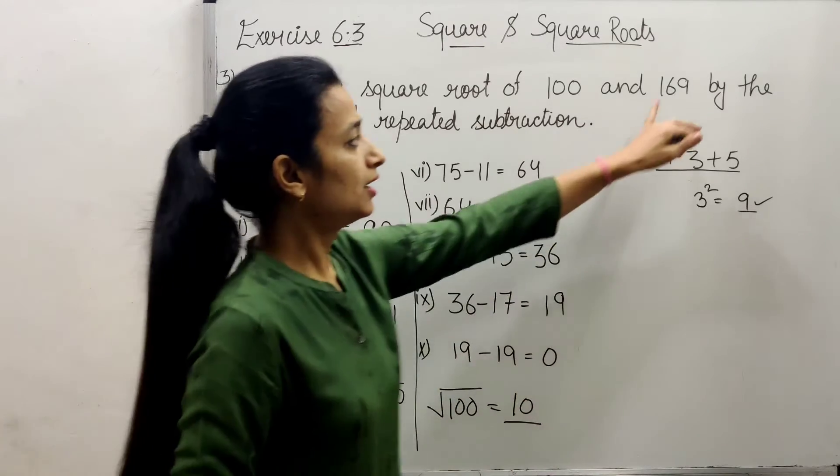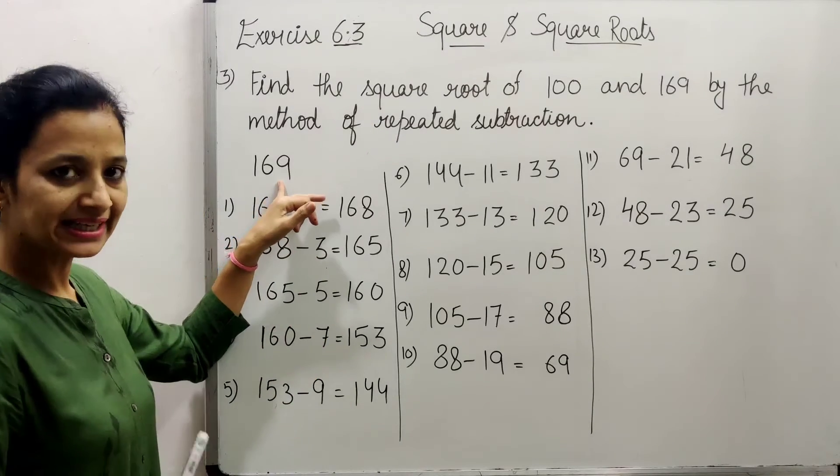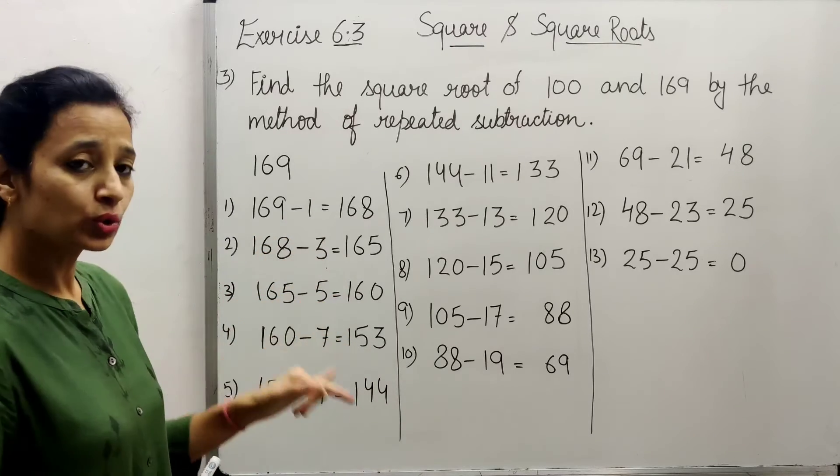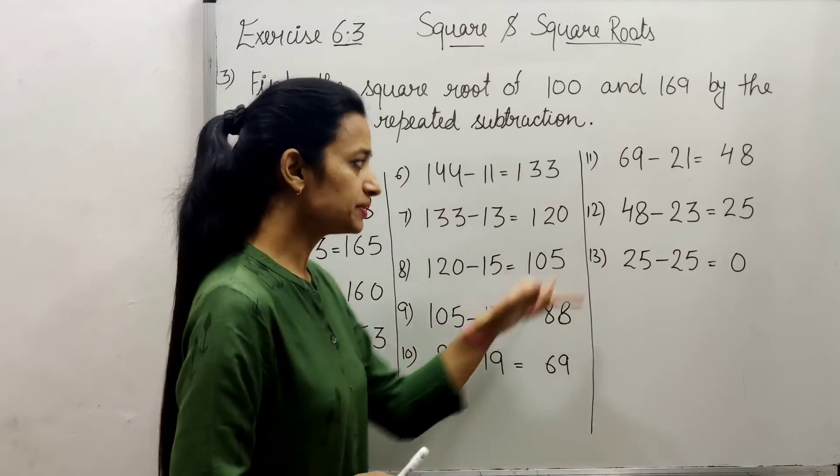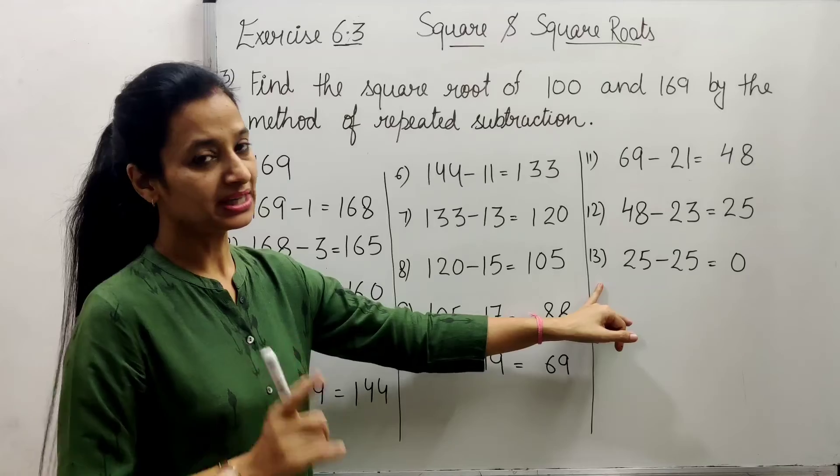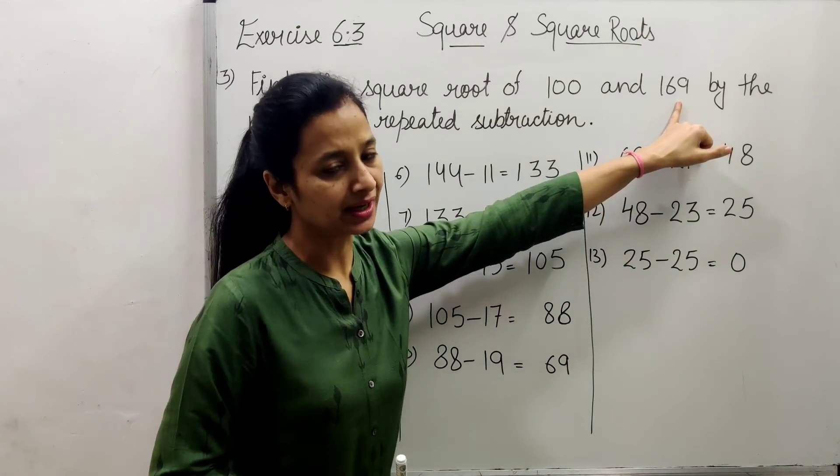Now understand this, we will do 169. We will do repeated subtraction again. We will minus the odd numbers, and the number of steps it takes to reach zero, that will be our answer - the square root of 169.